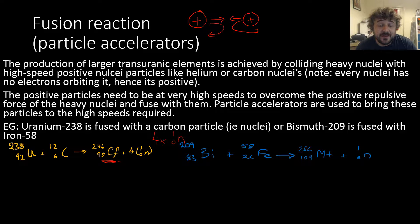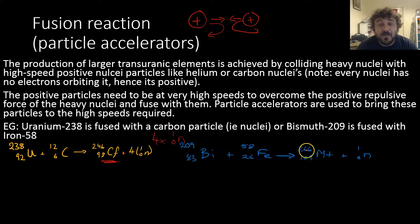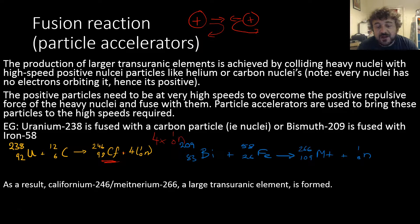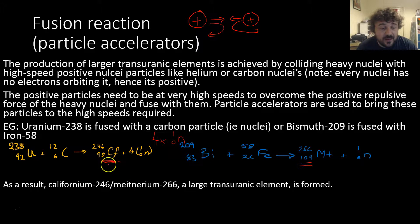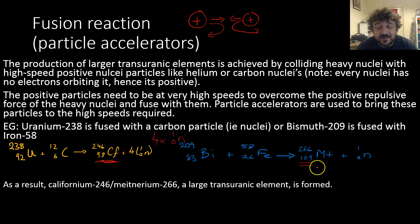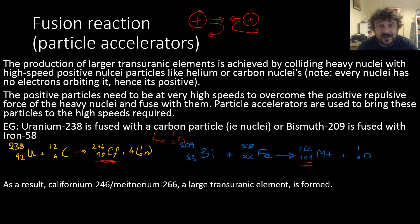The other reaction we've talked about is bismuth-209 being collided with iron-58. We smash them together at very high speed and we get meitnerium-266, which is atomic number 109, plus one neutron. At Z=109, that's a really heavy element, and we can make it by smashing larger atoms together — that's how they're made.